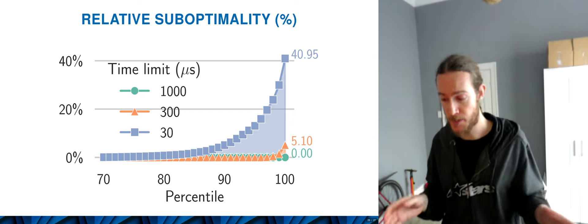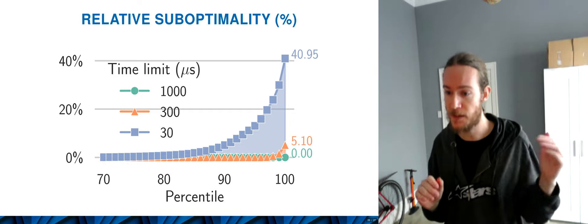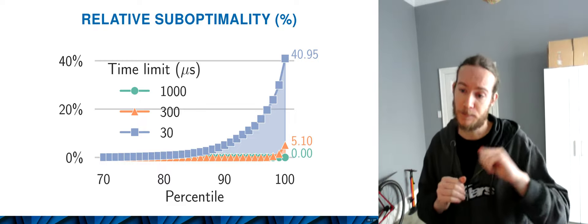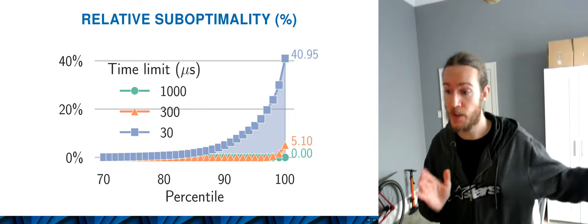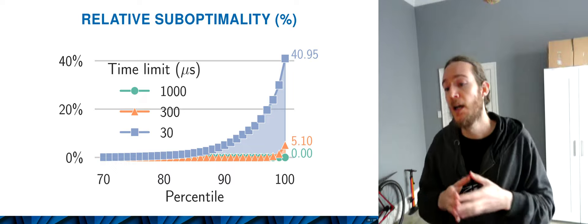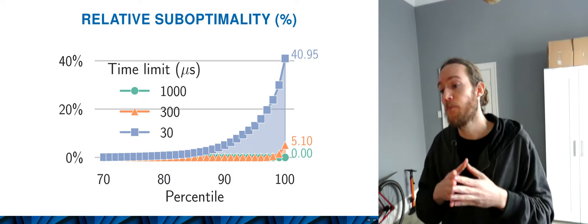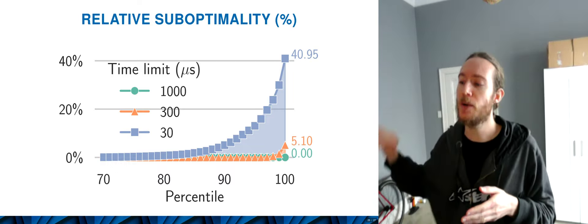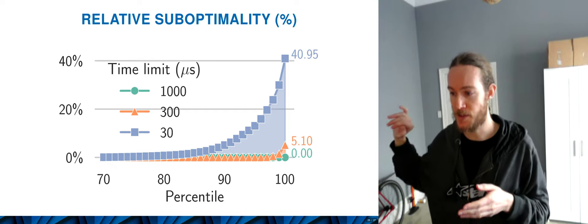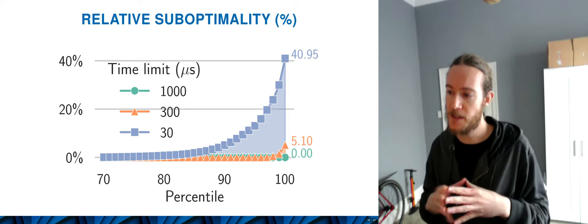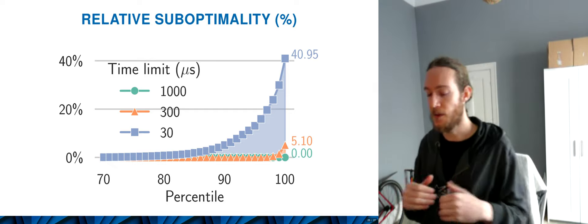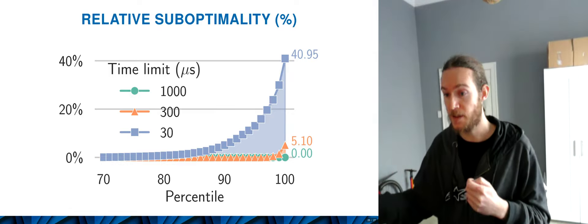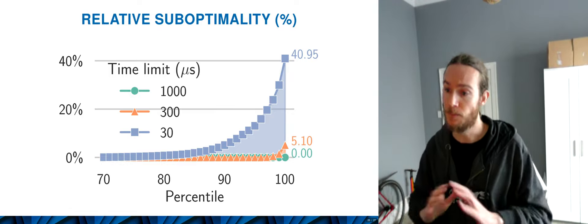If we give 30 microseconds — which is the baseline for CCH — then we get about 70% of queries solved to optimality. However, there's a gap that widens very quickly towards the last percentile of queries, rising to about 41%. So at worst, we can only give an answer that's within 40% of optimum.